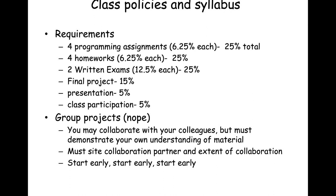For requirements and grading: four programming assignments collectively worth 25% of the grade, four homework assignments collectively worth 25%, and two written exams collectively worth 25%. The distribution is equal across assessment types, recognizing that some students may be nervous test-takers but perform better on homeworks and programming. There will also be a final project worth 15% requiring a PowerPoint presentation, and class participation worth 5%.